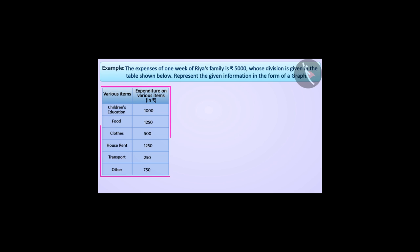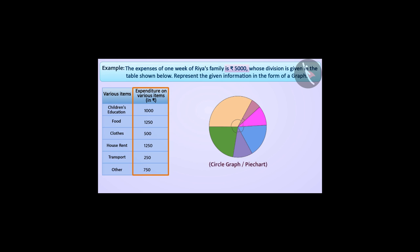Next example. The expenses of one week of Ria's family is Rs 5000, whose division is given in the table shown below. Represent the given information in the form of a graph. In the table shown, the entire expenditure of Rs 5000 is divided into various items. We know that the pie chart compares the different parts of a whole, therefore the information given should be shown as a pie chart. To construct a pie chart, we will find the central angle of expenditure on each item.